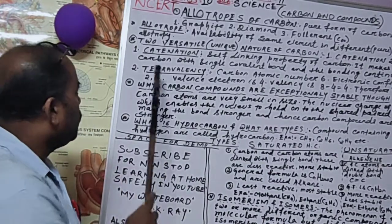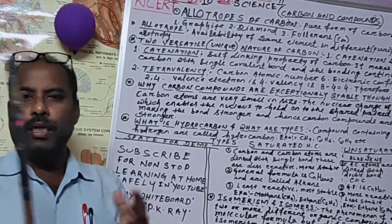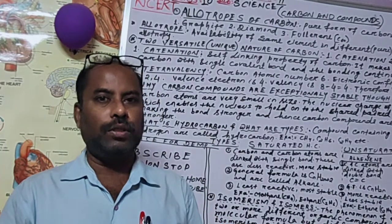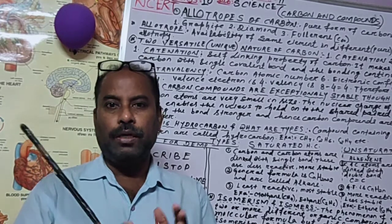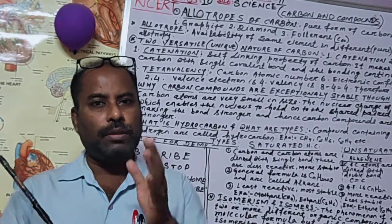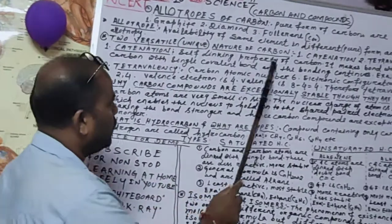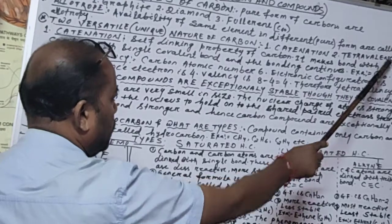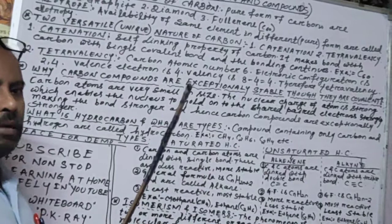Next, we come to the versatile nature of carbon. Carbon is a unique element — out of 118 elements, we call carbon the unique element because of its special versatile nature. The two properties that make carbon versatile are: one, catenation; and two, tetravalency. These two properties make carbon the unique element in the element society.